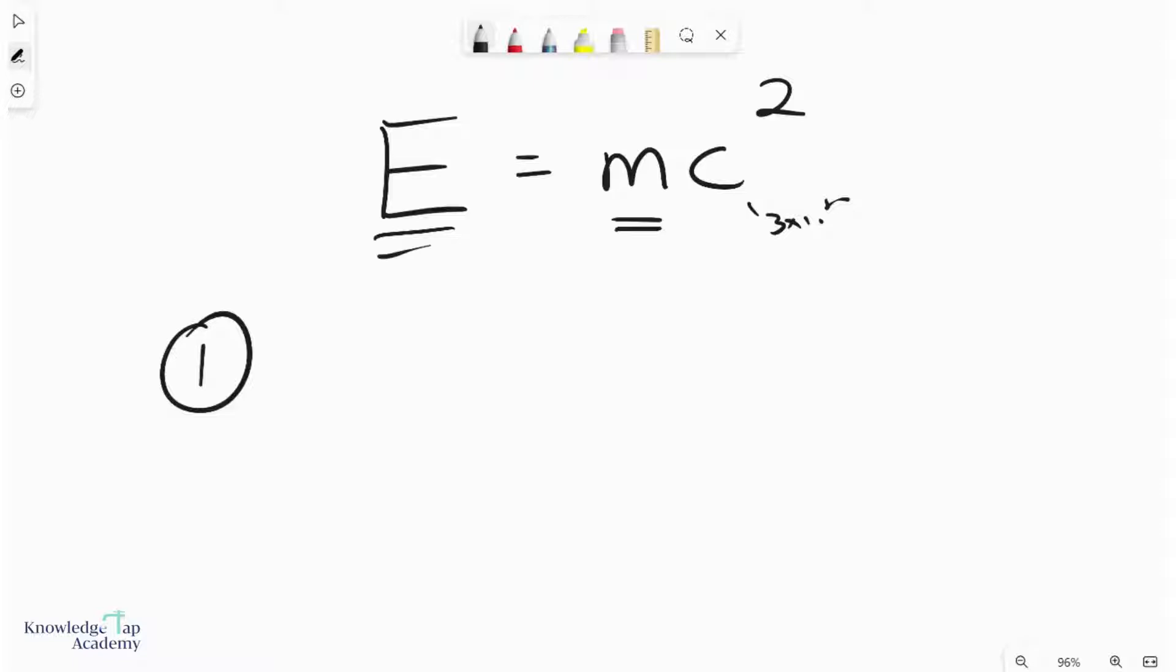So the significance of this is actually saying two things. Number one, you actually need energy to create mass, or you can actually destroy mass to get energy instead.